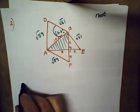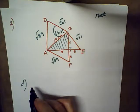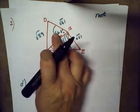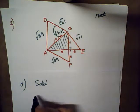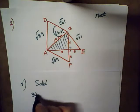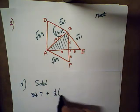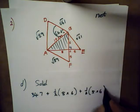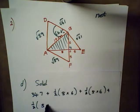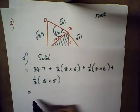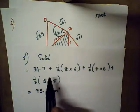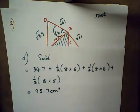Now for D: find the total surface area of the solid. The total surface area is the surface area of all the faces. So we already have triangle DBA, we had that as 34.7 plus a half base times height. My base is 8, my height is 6 plus a half, my base is 5, my height is 6 plus a half, my base is 8, my height is 5. I can plug that into the calculator and I obtain the answer 93.7 centimeters squared. Surface area is all the areas if you add it up.